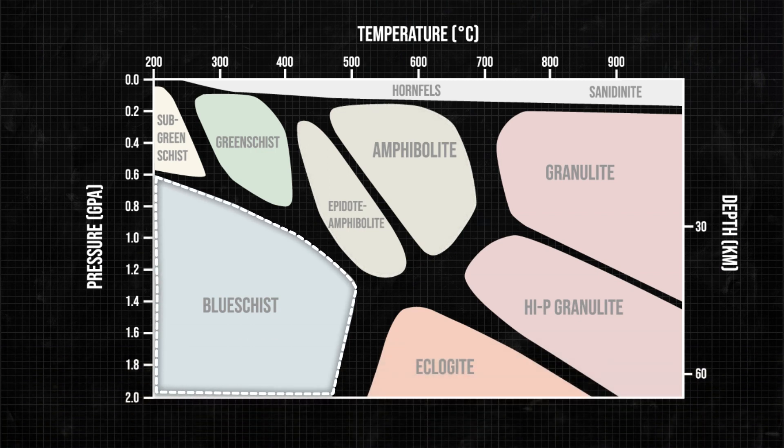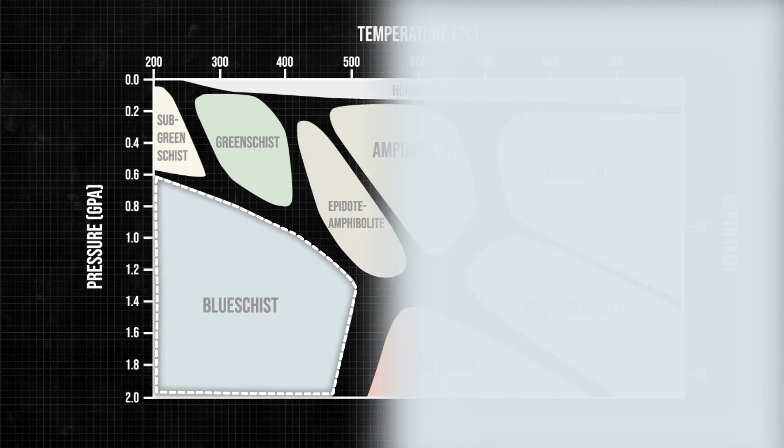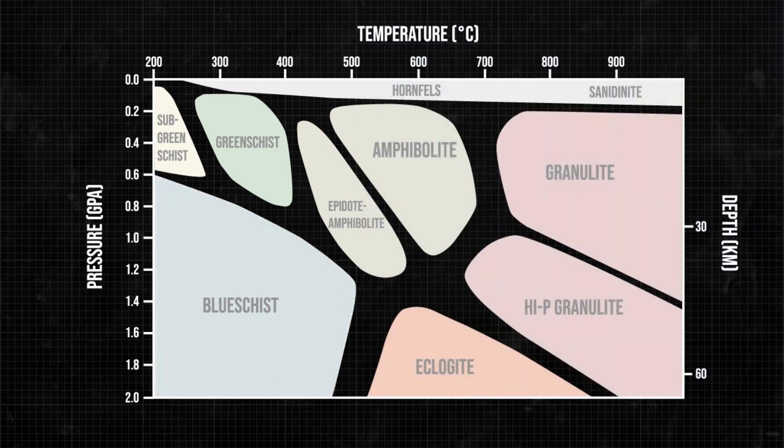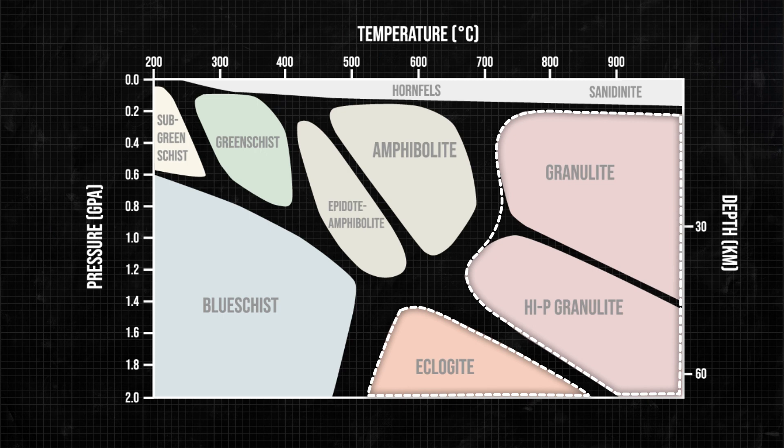Blueschists contain blue minerals, like the sodium-rich amphibole, glaucophane. Eclogite and granulite facies are named after the actual metamorphic rocks that form under those pressure-temperature conditions.